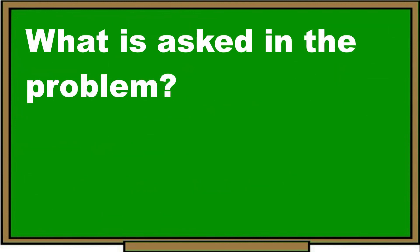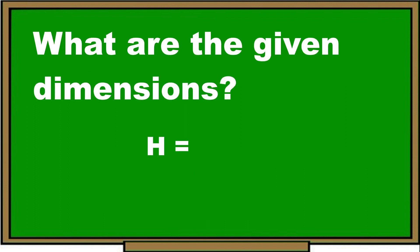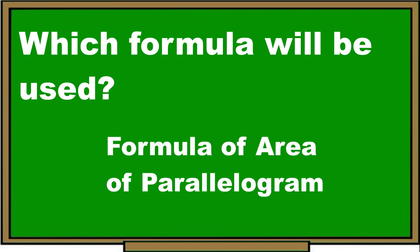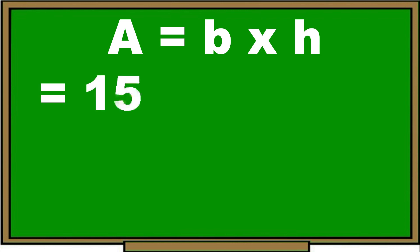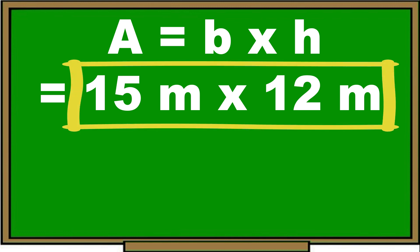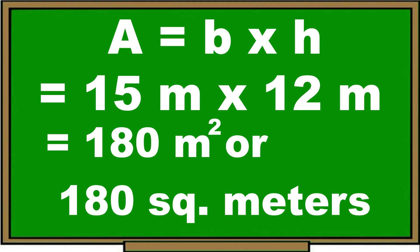For the building wall, what is asked is the area of the building wall. The given dimensions are a height of 12 meters and a base of 15 meters. We use the formula of a parallelogram: area equals base times height. Substituting: 15 meters times 12 meters equals 180 square meters. The area of the building wall is 180 square meters.